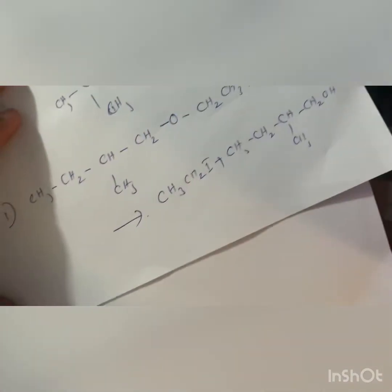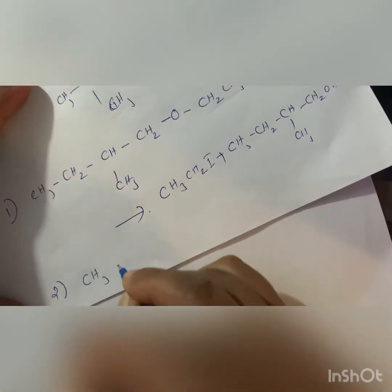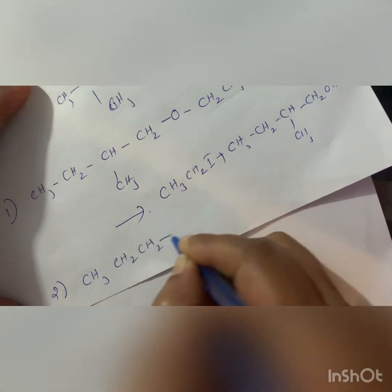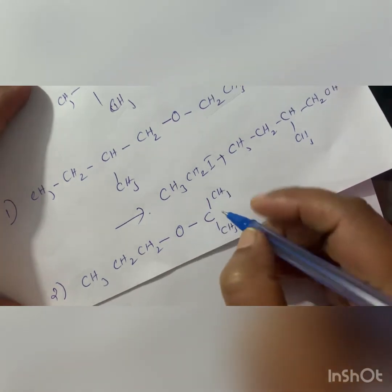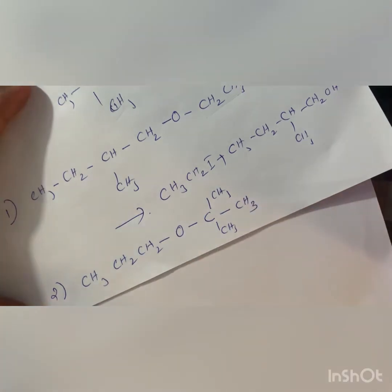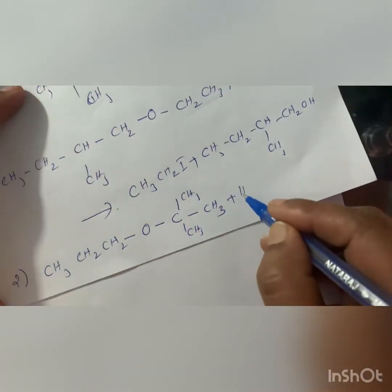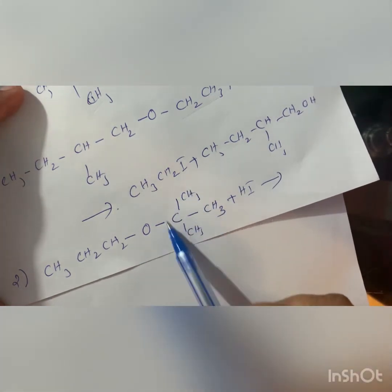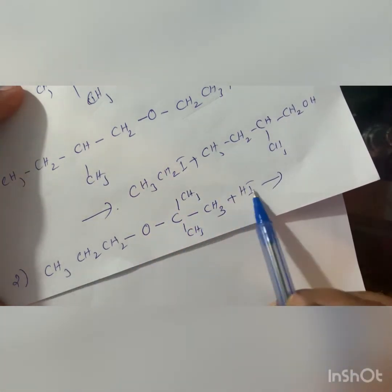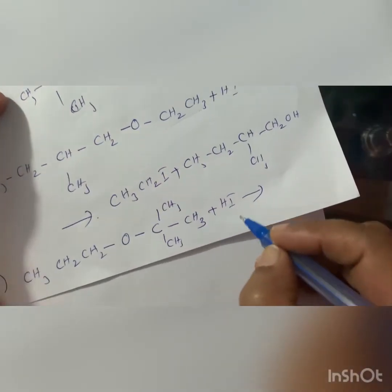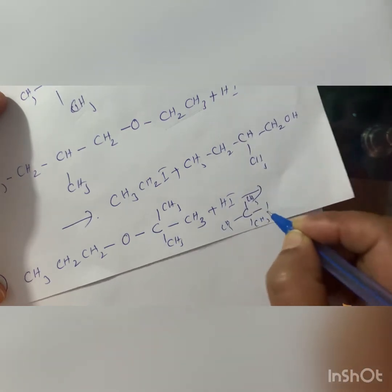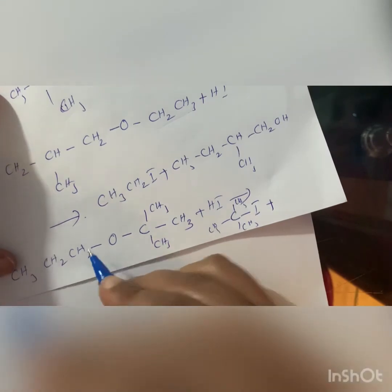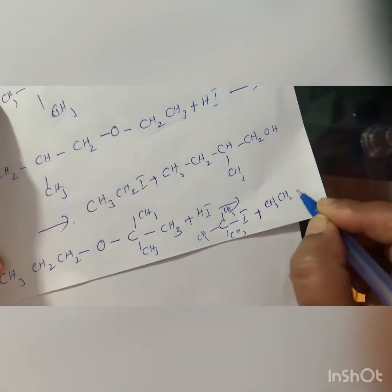Practice question 2: CH₃CH₂CH₂–O–C(CH₃)₃ plus HI. One side is primary (propyl) and the other is tertiary. So iodine adds to the tertiary group. Product: (CH₃)₃C–I plus CH₃CH₂CH₂OH.